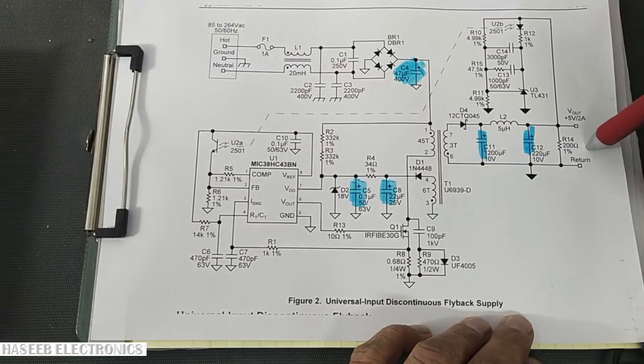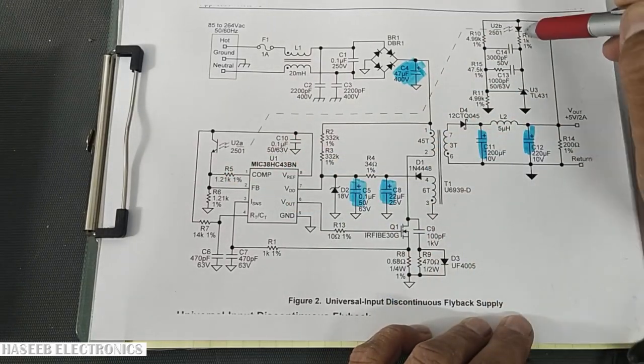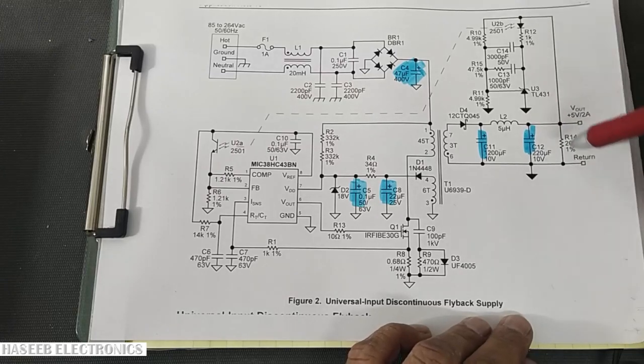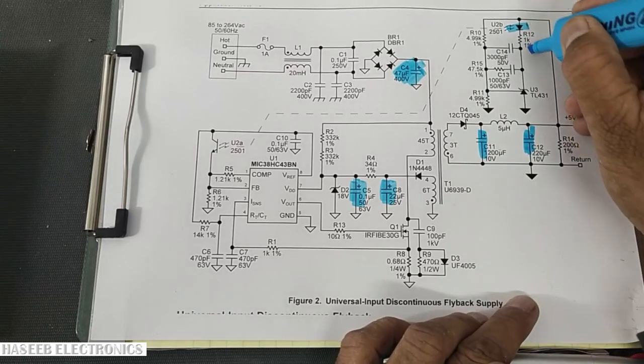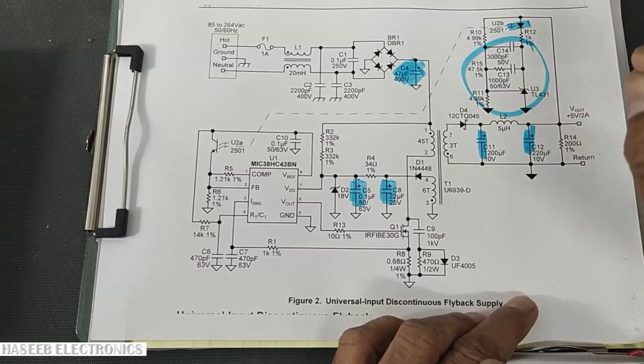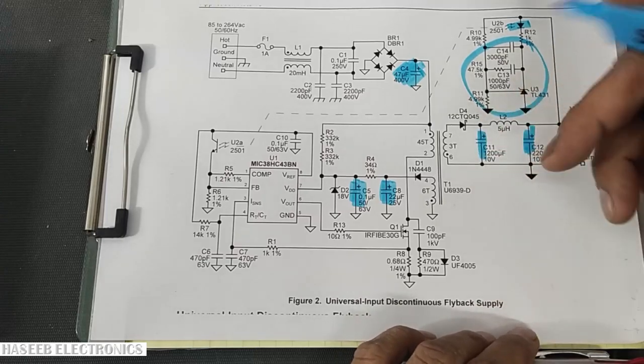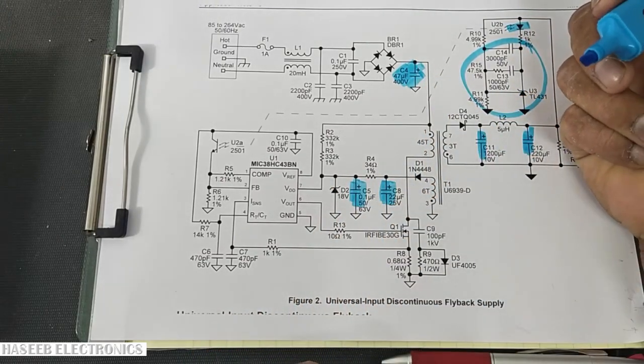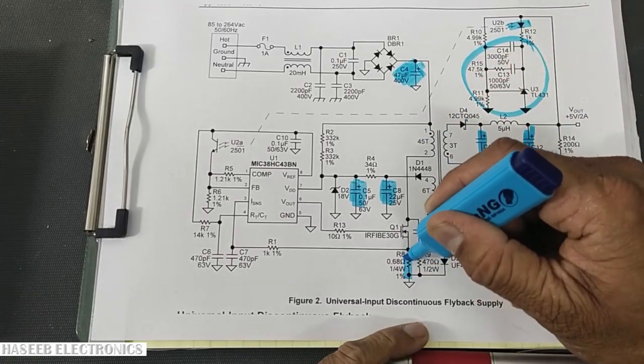If the optocoupler is bad, in that case it will make fluctuation. So optocoupler, feedback network, either it is TL431, either it is any zener diode, output filter capacitors, VCC capacitor, main DC capacitor, then another point here is a current sensor resistor.